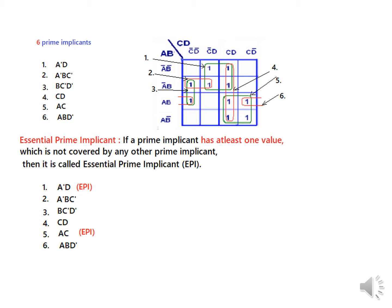So a-dash d is an EPI — essential prime implicant. Then you can see various cells covered by two prime implicants. But this one cell is only covered by one prime implicant. Therefore, that group — number five — is also an essential prime implicant.